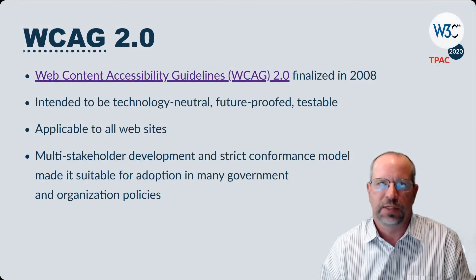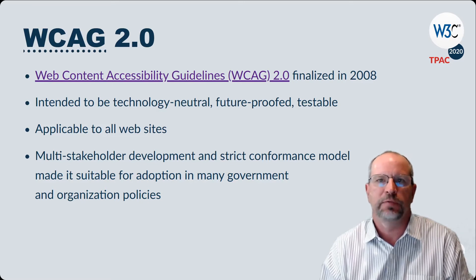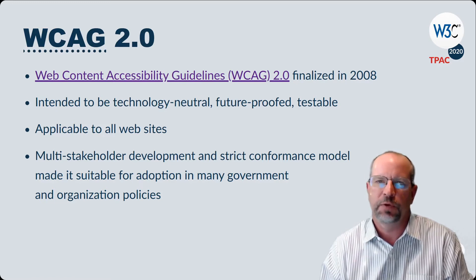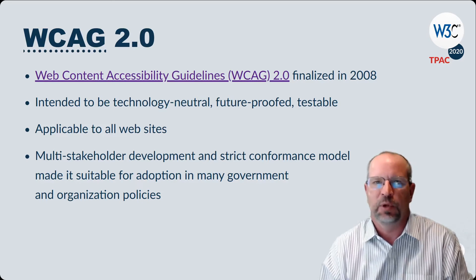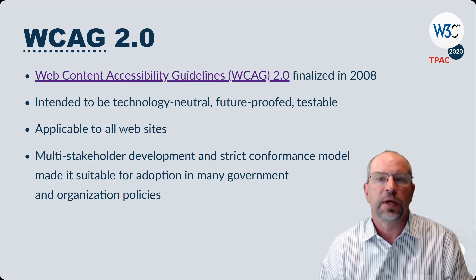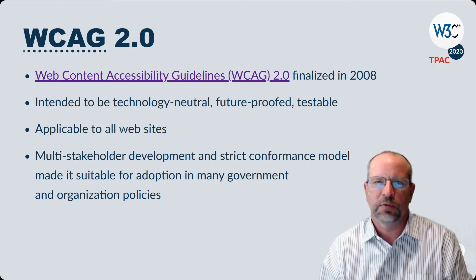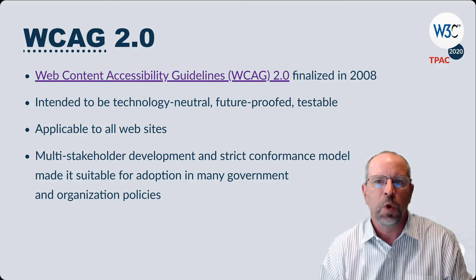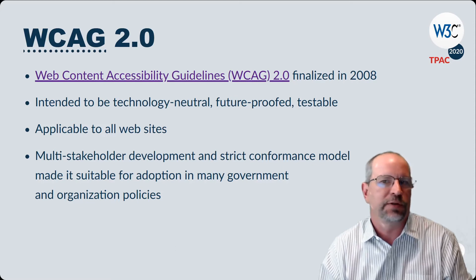WCAG 2.0 was finalized in 2008. It's been designed to be technology neutral, meaning these standards were applicable regardless of which technologies were used to build websites. It's been developed to be future proof, meaning the standards would be applicable regardless of how technologies might evolve. It's testable, meaning it's possible to determine if sites have met the guidelines without ambiguity. It applies to all websites. The W3C uses a multi-stakeholder development model, which was critical for the successful development of the guidelines. WCAG 2.0 also introduced a strict conformance model, which allowed the guidelines to be referenced by governments and standards organizations.